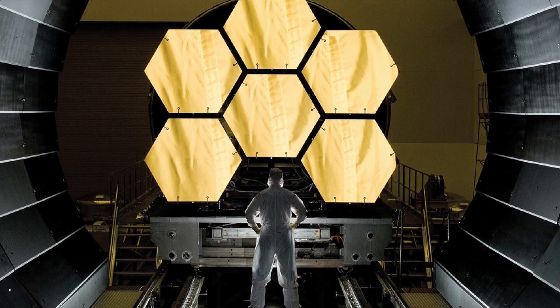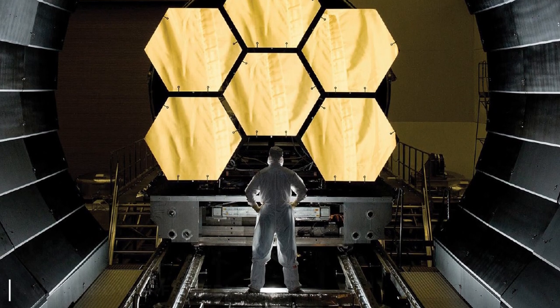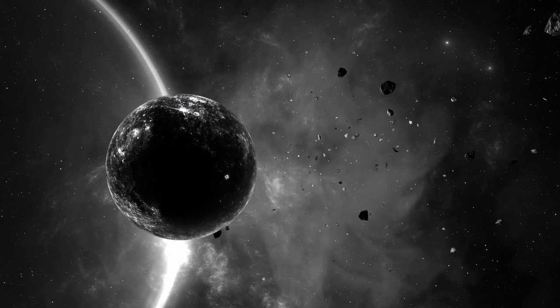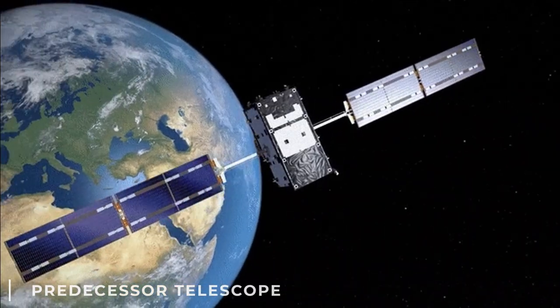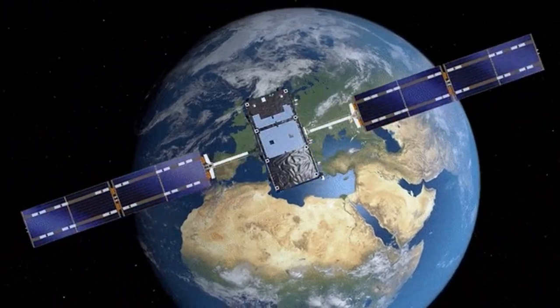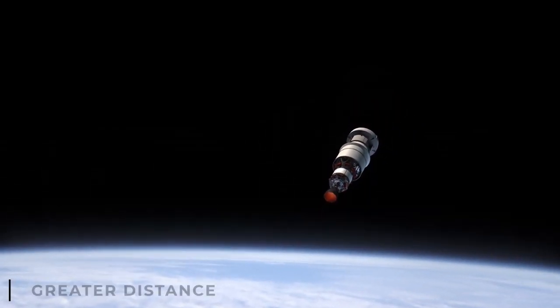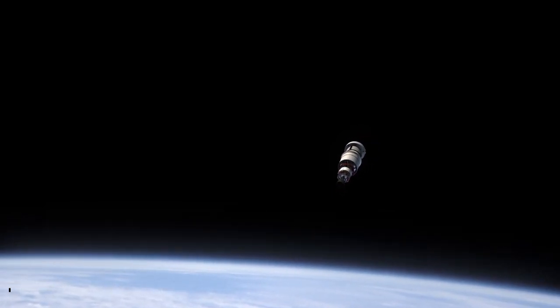JWST, NASA's latest and most powerful telescope, was able to identify six masses at a distance never seen before. The predecessor telescope was more limited and was in Earth's orbit. With the JWST, it's different. It's been launched to a greater distance, allowing a deeper view of the universe.